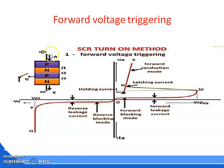Here, anode is made positive and cathode is negative. Gate circuit is open. J1 is in forward biasing mode, J3 is in forward biasing mode, and J2 is in reverse biasing mode.